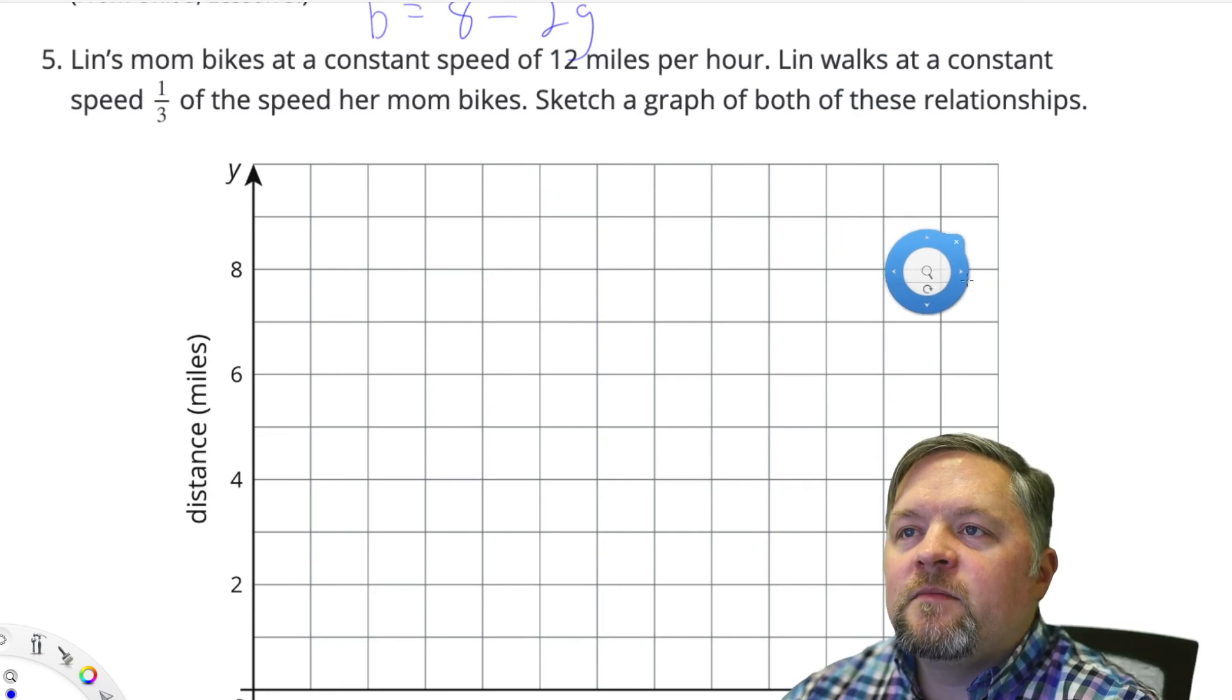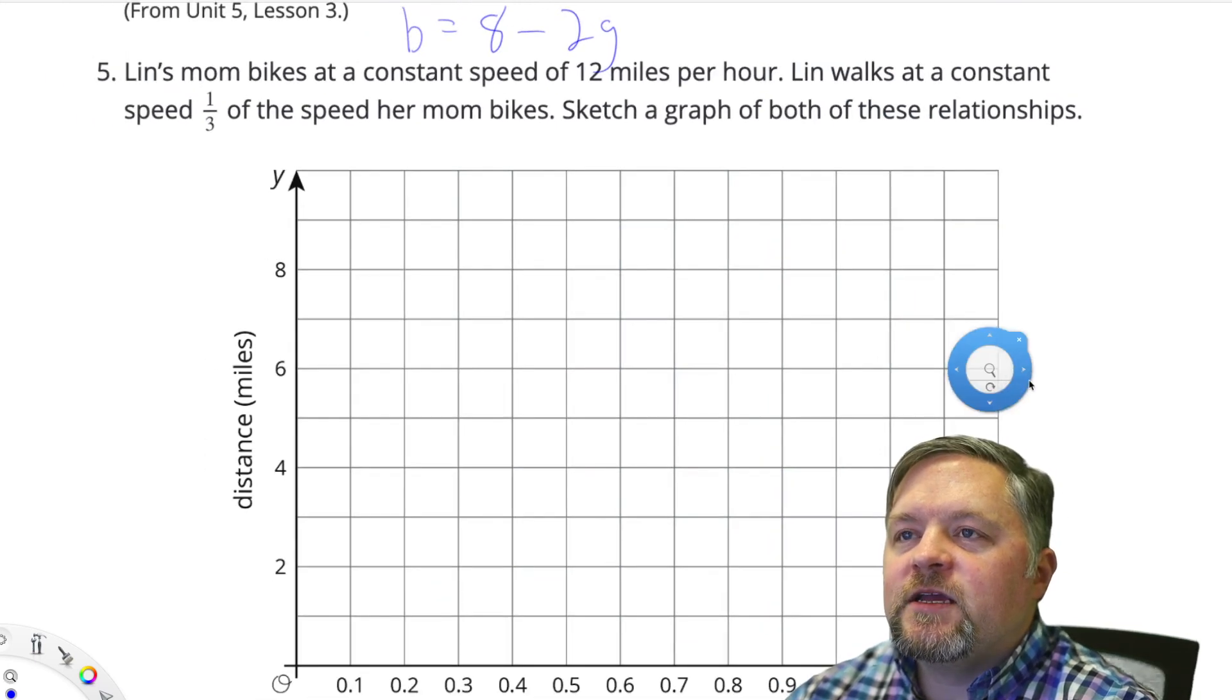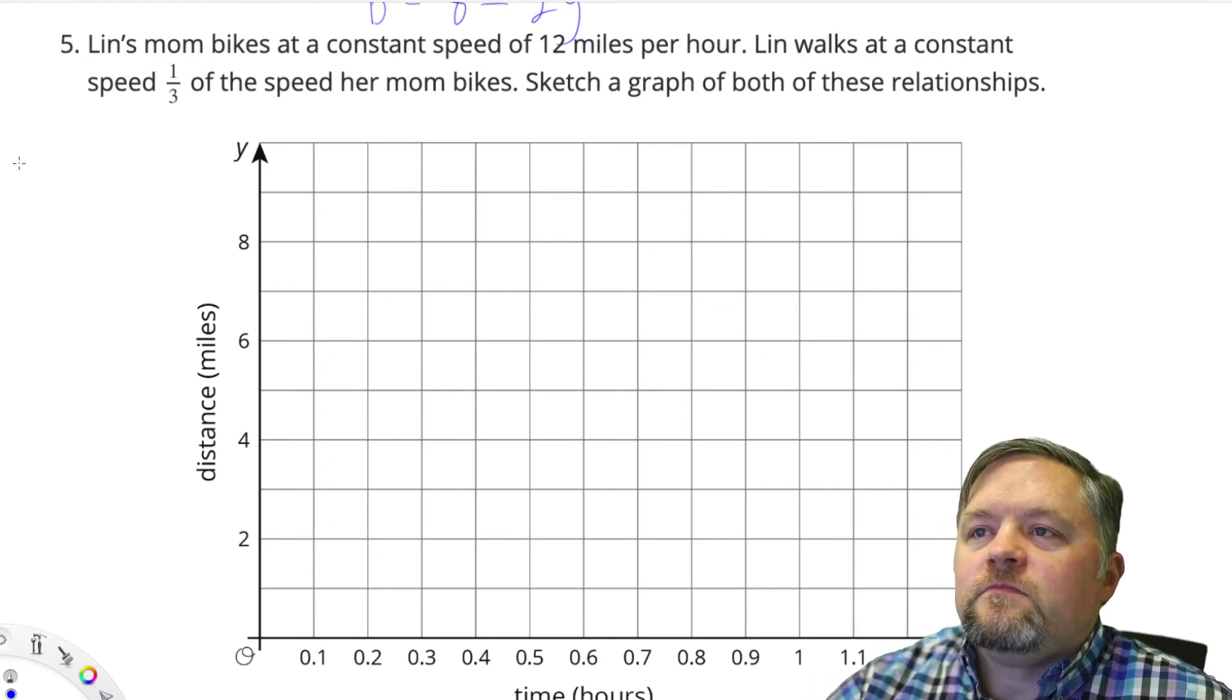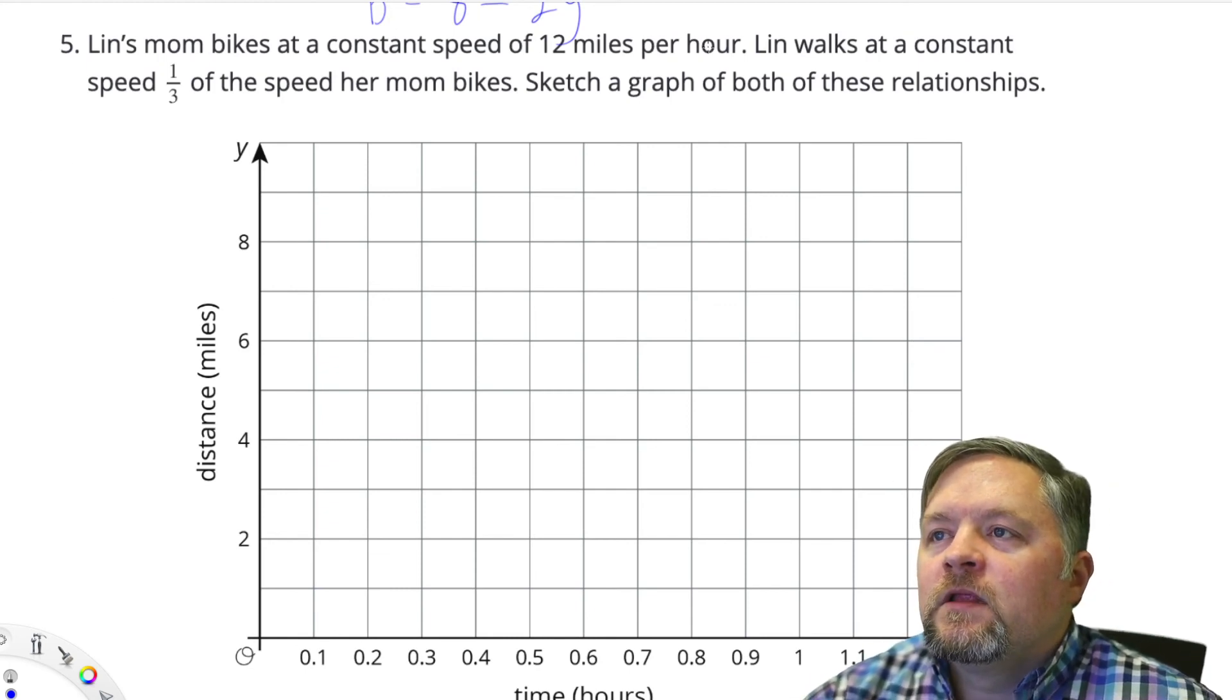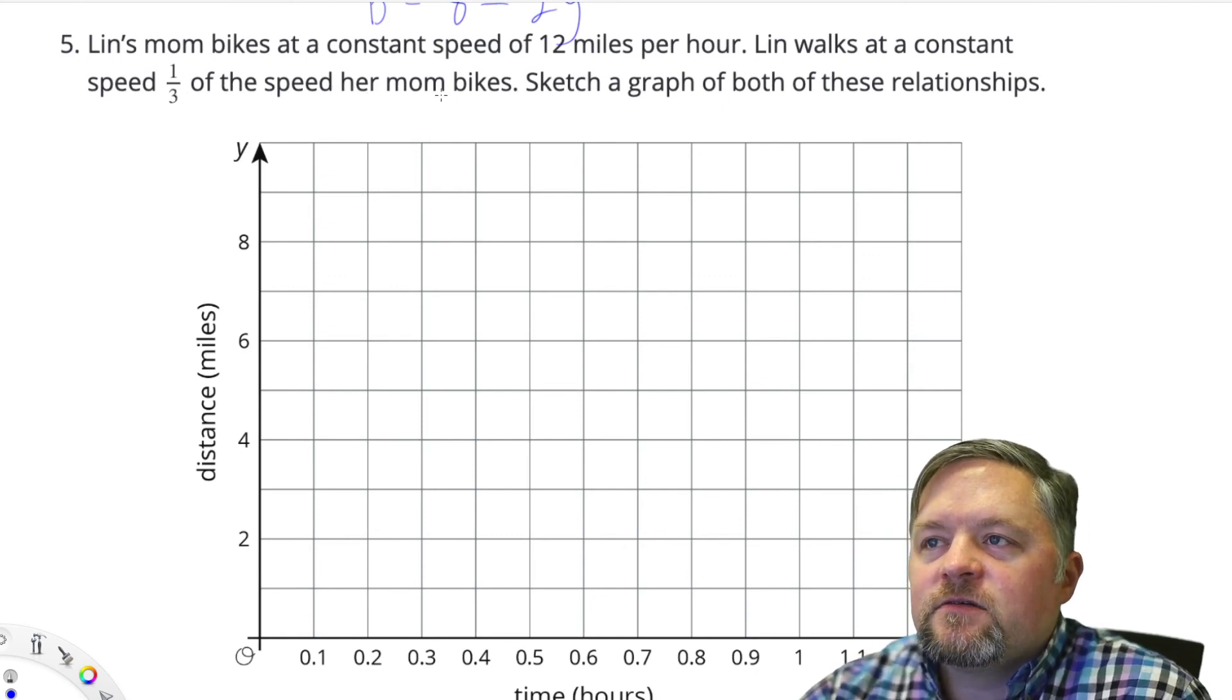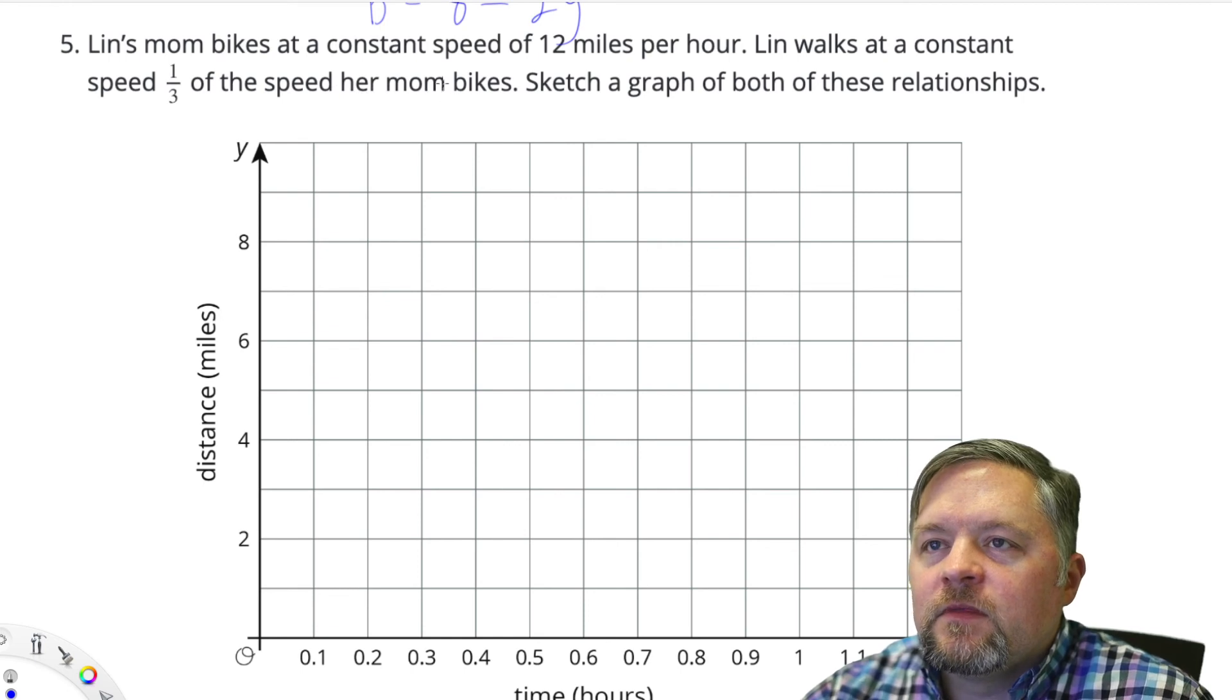Lynn's mom bikes at a constant speed of 12 miles an hour. Lynn walks at a constant speed one third of the speed her mom bikes.